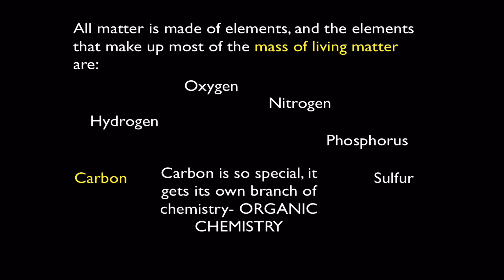The other remaining smaller percentage is made up of the other elements in that C-H-O-N-P-S acronym we learned before. So carbon is special. And carbon gets its own branch of chemistry called organic chemistry. So organic chemistry is the branch of chemistry that focuses on the chemicals that contain carbon.